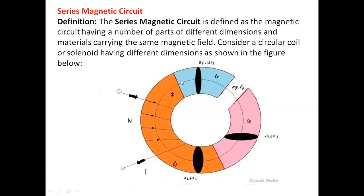So here in this figure, these are the different parts having different cross-sectional areas. A1 is the cross-sectional area for the first part, A2 for the second part, A3 for the third part. The respective permeabilities are μR1, μR2, μR3. The lengths are L1, L2, and L3. And one more part is there — that is a hollow, there is nothing connected physically, but there is an air gap with length equal to LG.